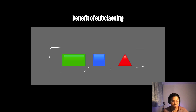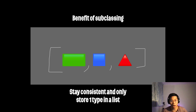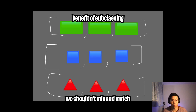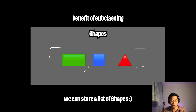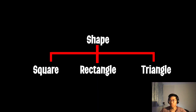The benefit of subclassing is that we can store these three shapes in a list. In lesson 10 I mentioned you should only store one type inside a list. Without subclassing, we'd only have a list of squares, a list of rectangles, or a list of triangles. But now that we've subclassed these objects under the bigger umbrella of shapes, we can store a list of shapes. For each shape we can get the area, perimeter, base, and height. Since square, rectangle, and triangle all subclass shape, we can call shape the parent class.